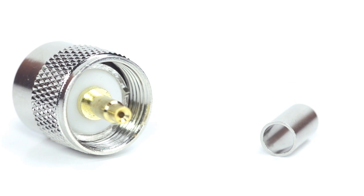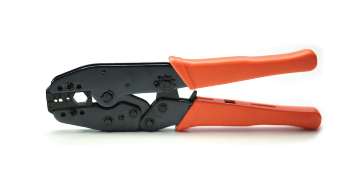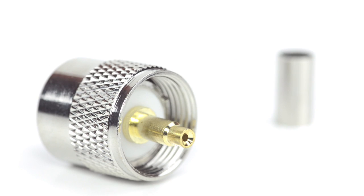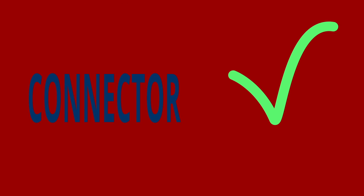For this installation, you will need a coax stripper, coax cable, a crimp tool, and the UHF connector. Keep in mind you will want to make sure that your coax stripper, crimp tool, and connector match the coax cable that you are installing.